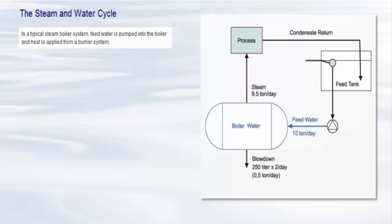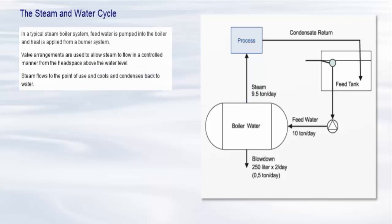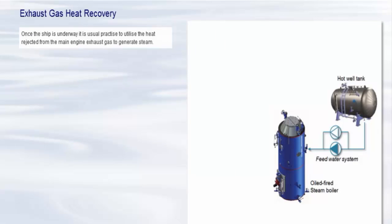feed water is pumped into the boiler and heat is applied from a burner system. Temperature and pressures increase according to the boiler design. Valve arrangements are used to allow steam to flow in a controlled manner from the headspace above the water level. Steam flows to the point of use and cools and condenses back to water. Condensate water is typically recovered and recycled as boiler feed water.